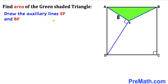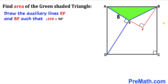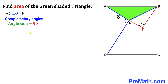Our first step is to draw some auxiliary lines. Let's extend line AE all the way to a new point F, and connect B to F. In our new diagram, we can see that angle EFB is 90 degrees.